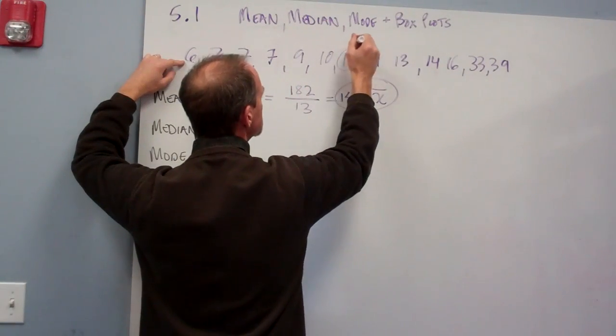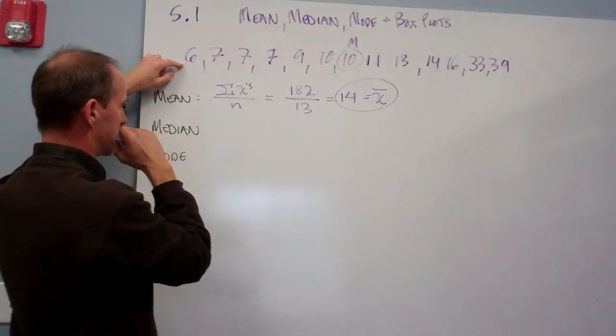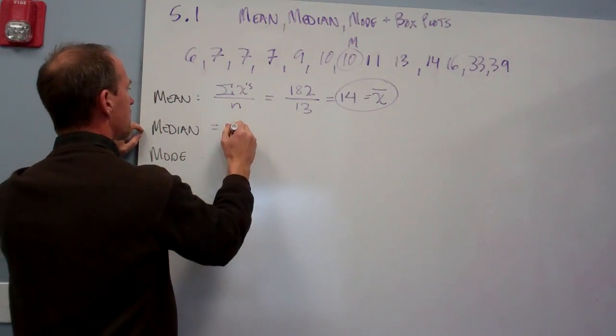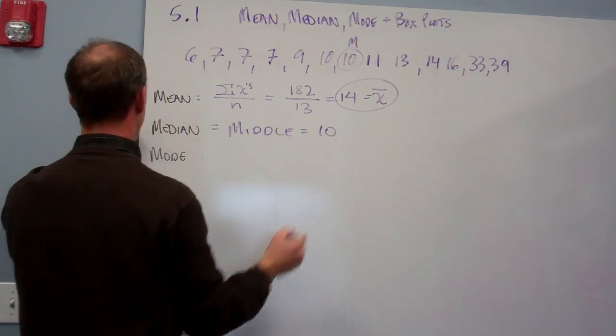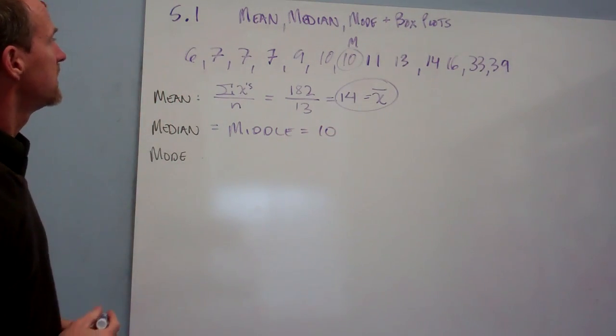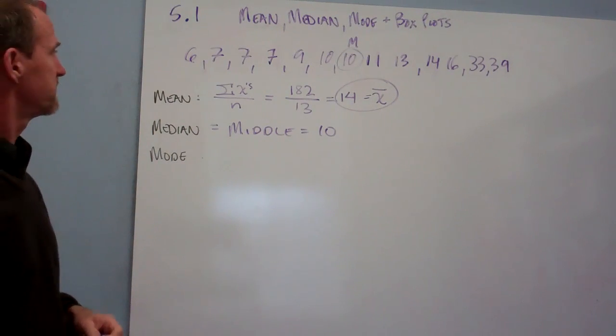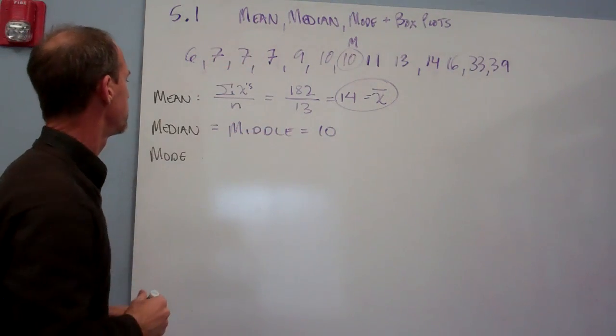The mode is the number that occurs most often, and this one just happens to be seven. Sometimes the mode is a useful